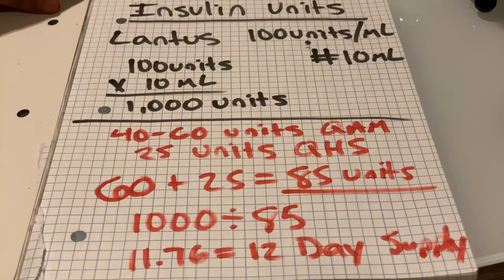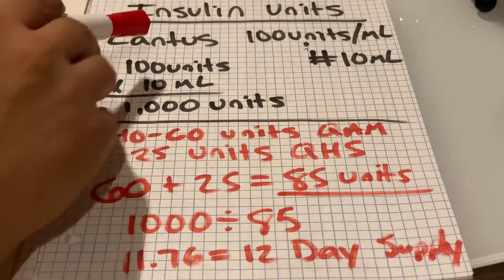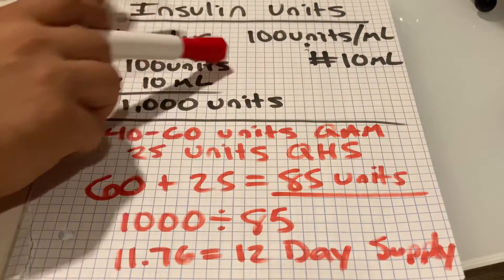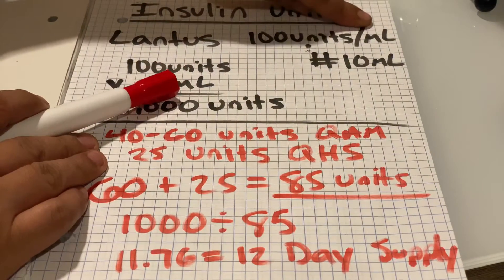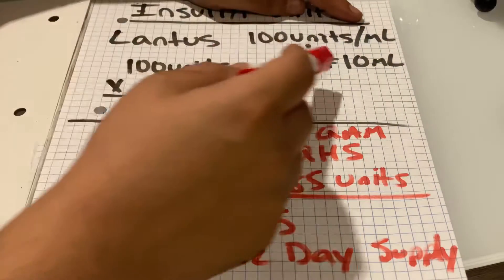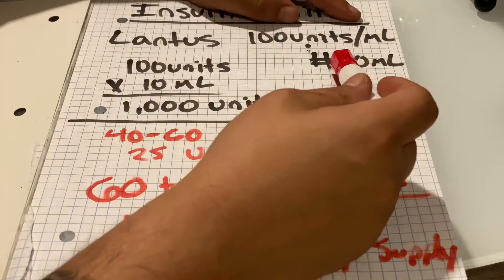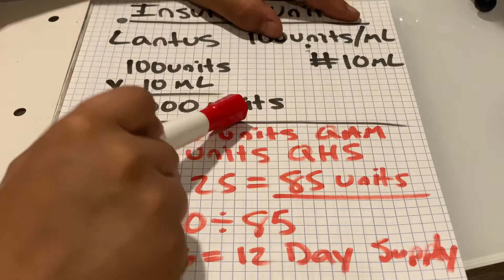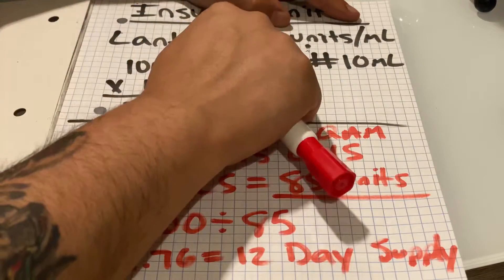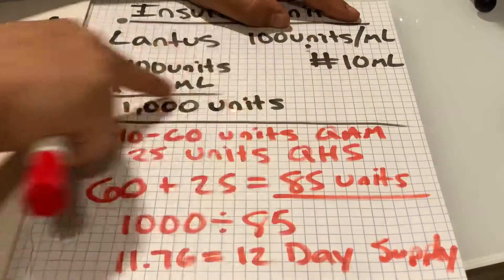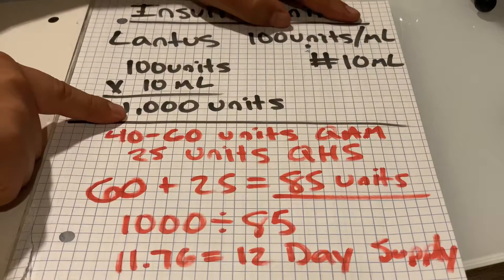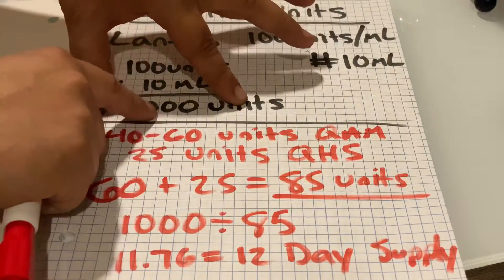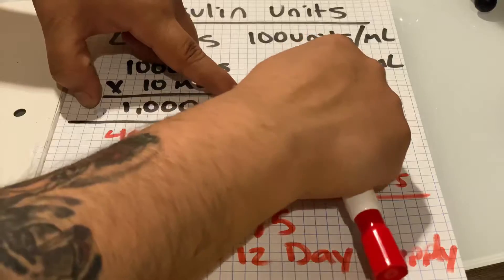Again, Lantus comes in the strength of 100 units per milliliter. So right off the bat, if we give one vial, which is usually 10 milliliters, we know we have 1,000 units. Because we took our strength of 100 units times the quantity of 10, which gives us 1,000 units to dispense, or 10 milliliters.